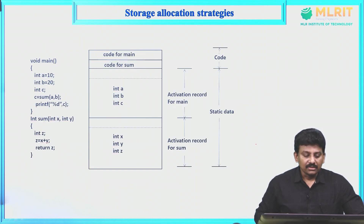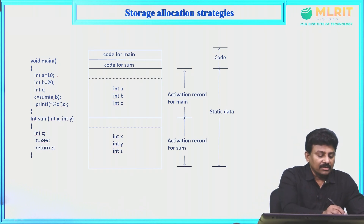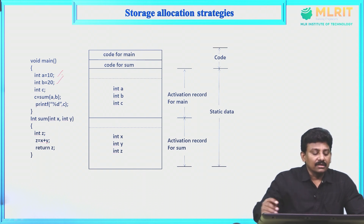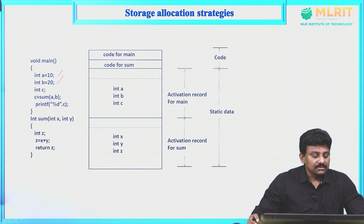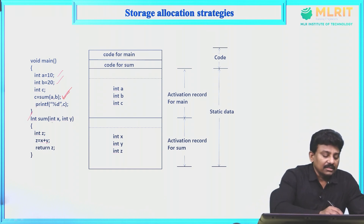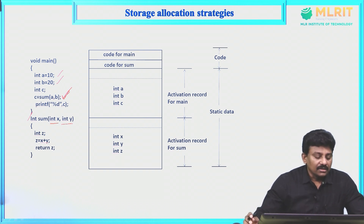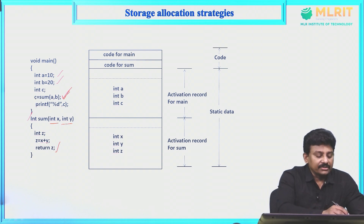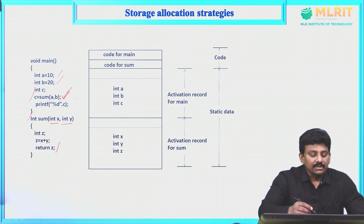Here is the example for static allocation. The main program has three variables a, b, c of type integer. Variables a and b are assigned values 10 and 20. Then c is assigned the value of the sum function and we print the value of c. Whenever we call the function sum, the control goes to the definition of sum where the formal parameters are x and y. x and y are added and assigned to variable z, and the return value of z is returned, so the return value is assigned to c, and we print the value of c.